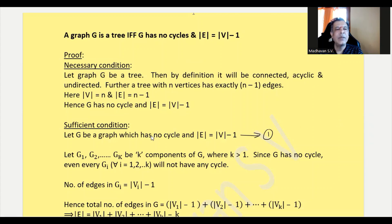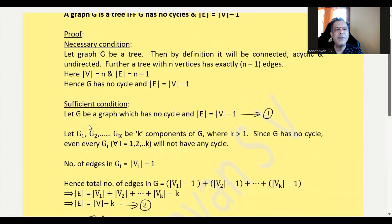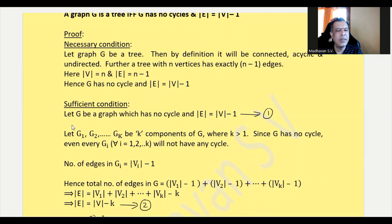Sufficient condition: Let G be a graph which has no cycle and |E| = |V| minus 1 — consider this as equation 1. Now let us consider there are k components of graph G, namely G1, G2, up to Gk, where k is greater than 1. Since G has no cycle, even the components will not have any cycle in them.